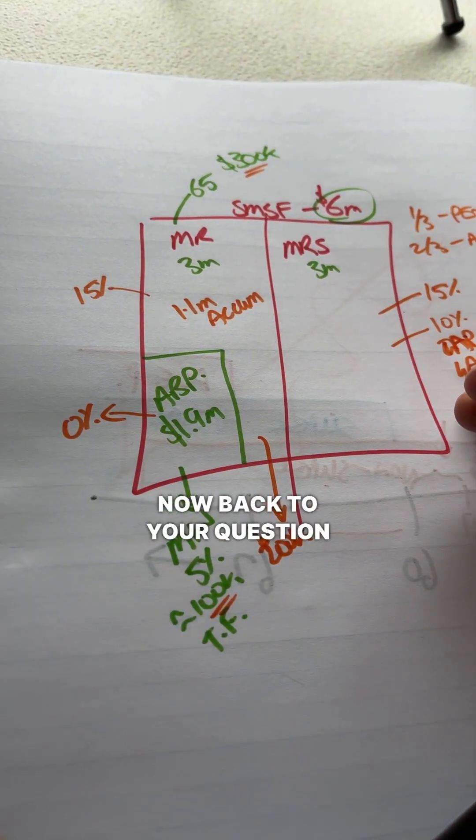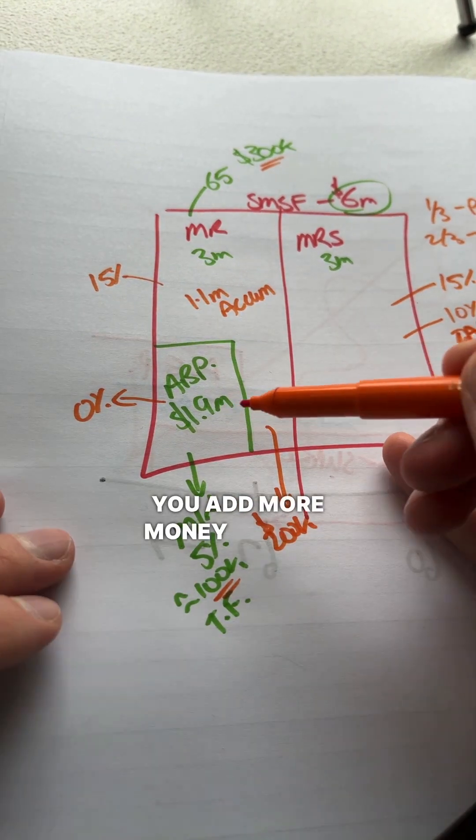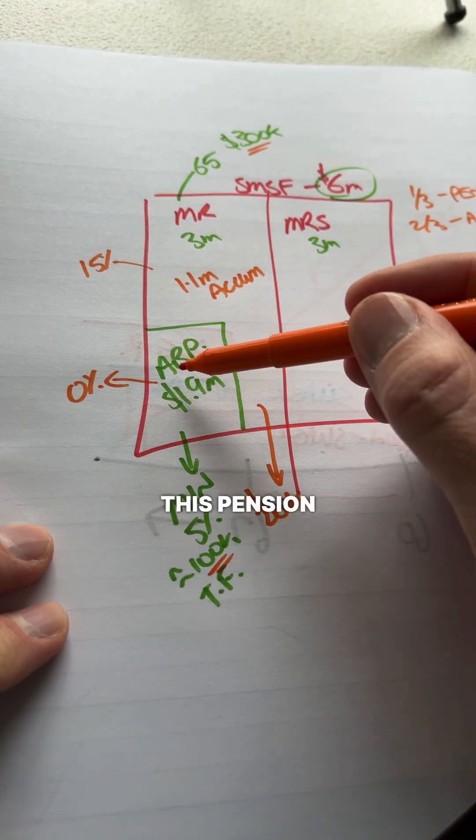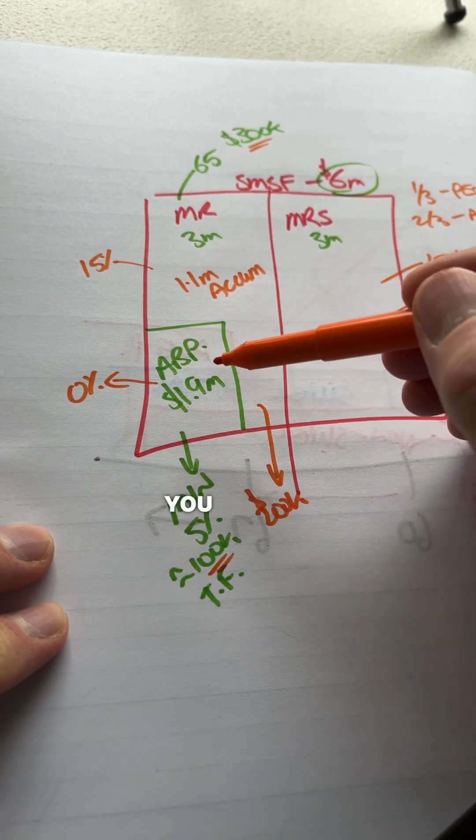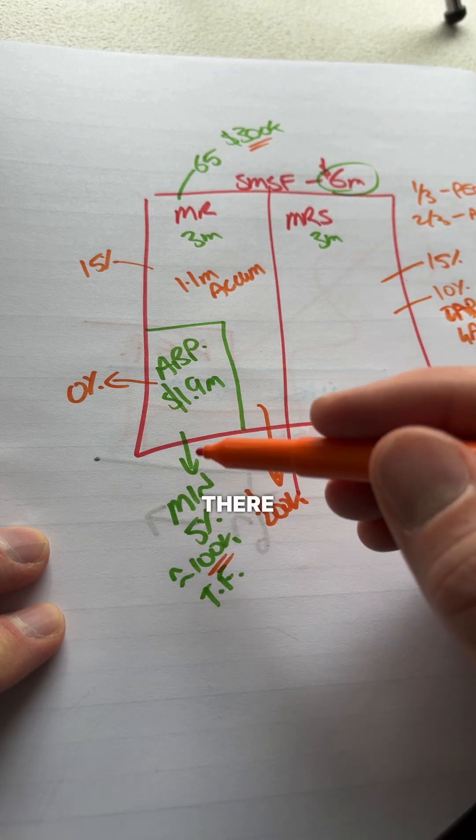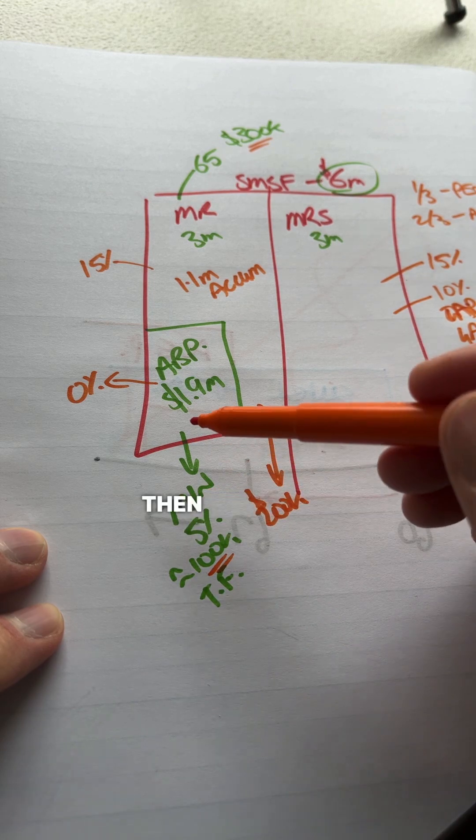Now, back to your question that prompted this whole lengthy video was around, can you add more money to your account-based pension as the balance goes down? So, if you've started this pension with $1.9 million, you've used up all of your transfer balance cap, and all you've taken out of there is money that you've called pension payments, so for example, this $100,000, then you can't.